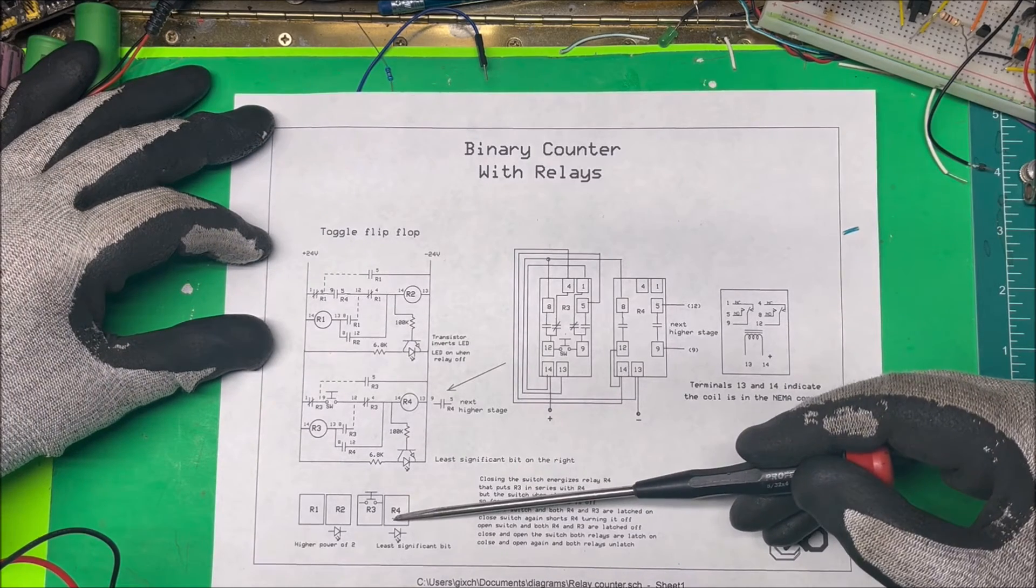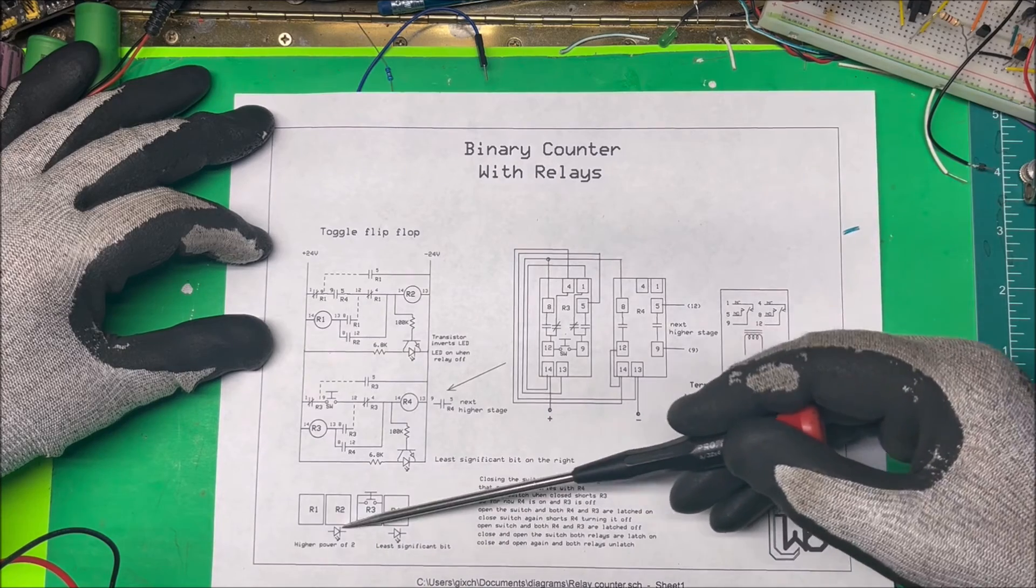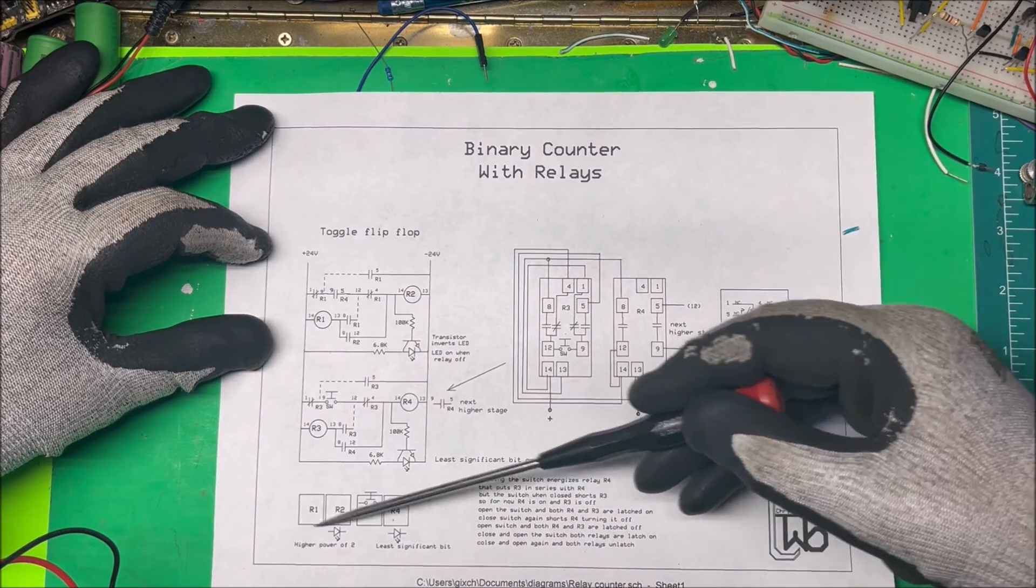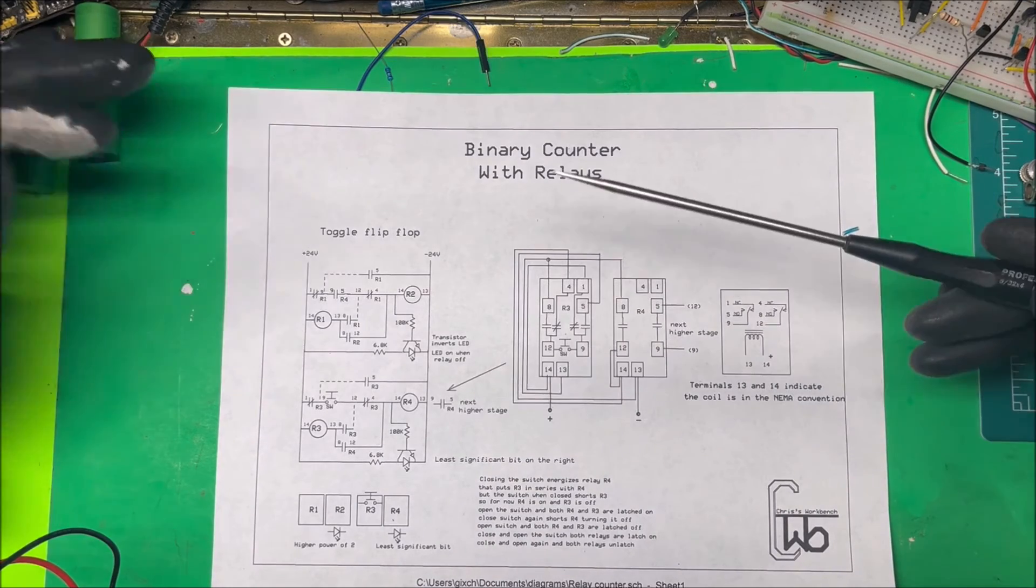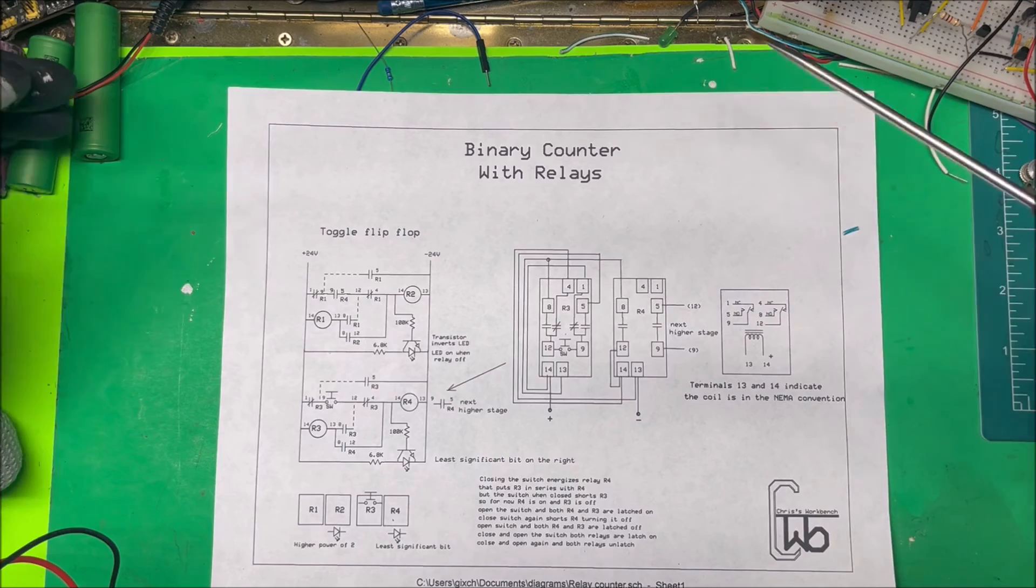For this here, the 14 and 13 are the coils on here. Yeah, that's all there is to it. Of course, I did this side here with the least significant number and then they go up here with higher power of two going to the left. Yeah, so that's all there is to it. It works good.